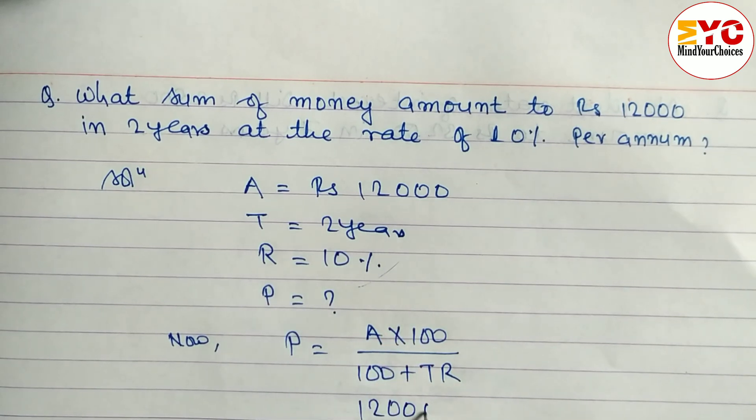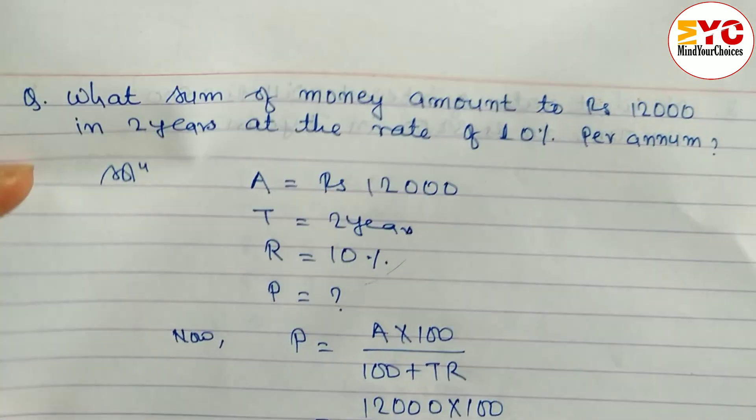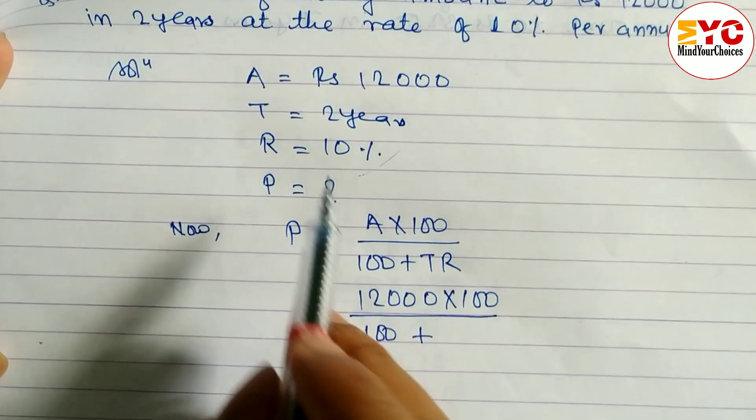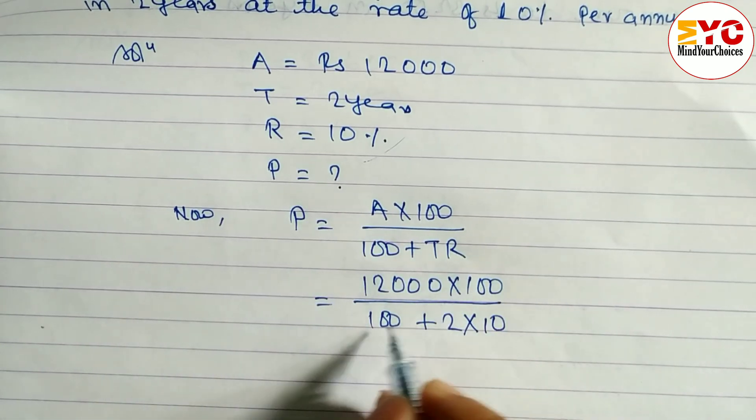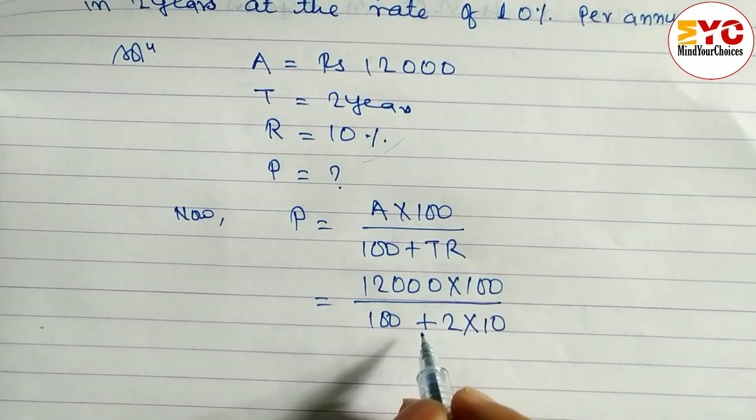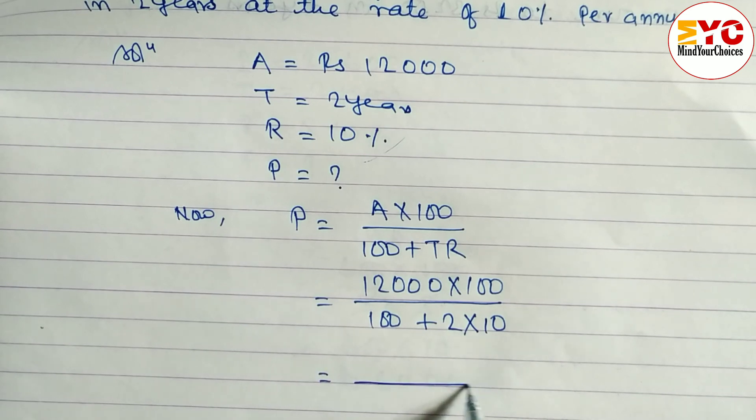A is equal to 12,000. So we have to write here 12,000 into 100 by 100 plus, what is the value of T? T is 2, so we have to write 2 into R. R is equal to 10. We cannot cancel this 200 because here is addition. So first of all what we have to do...